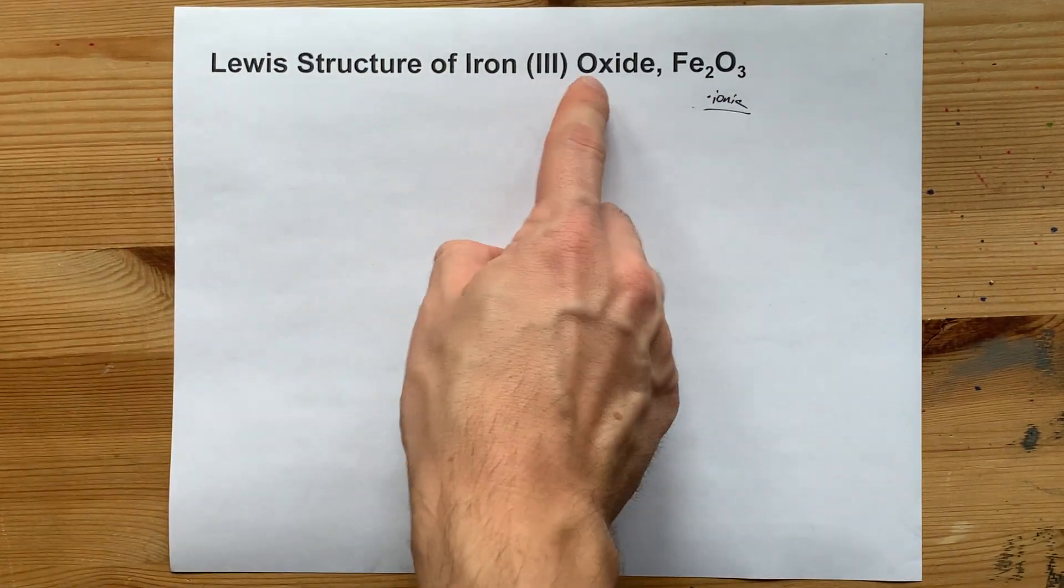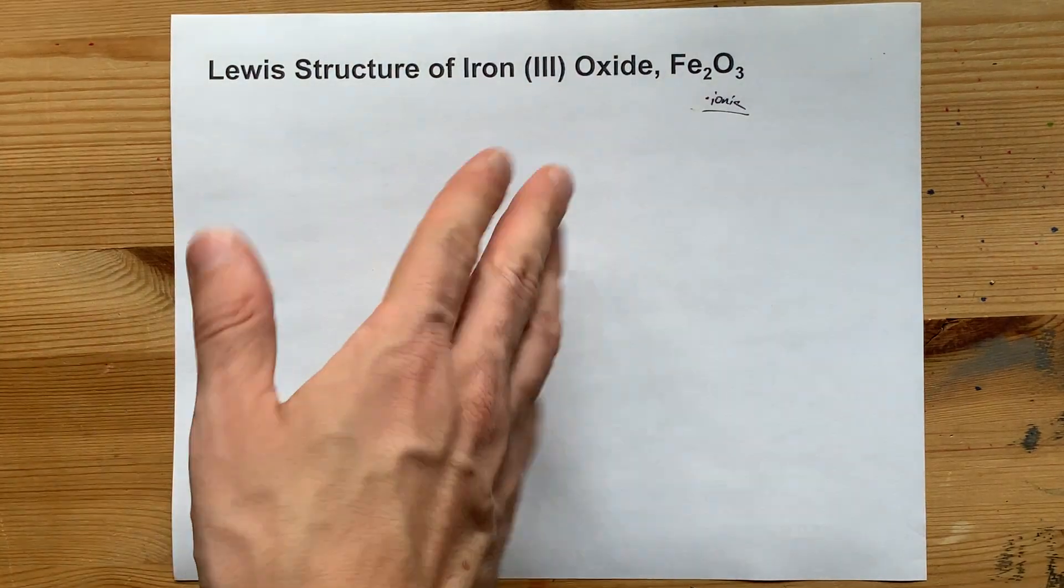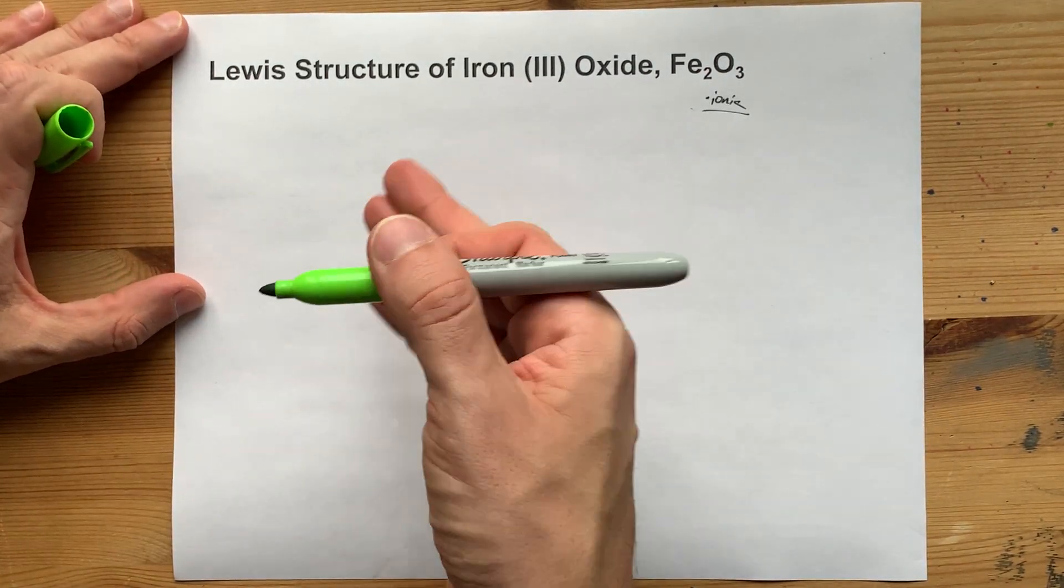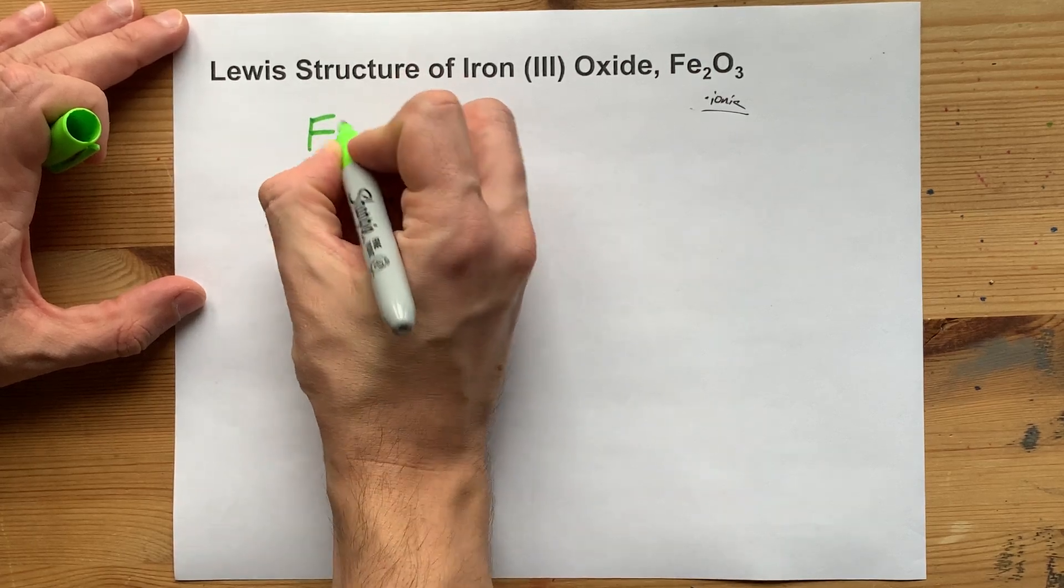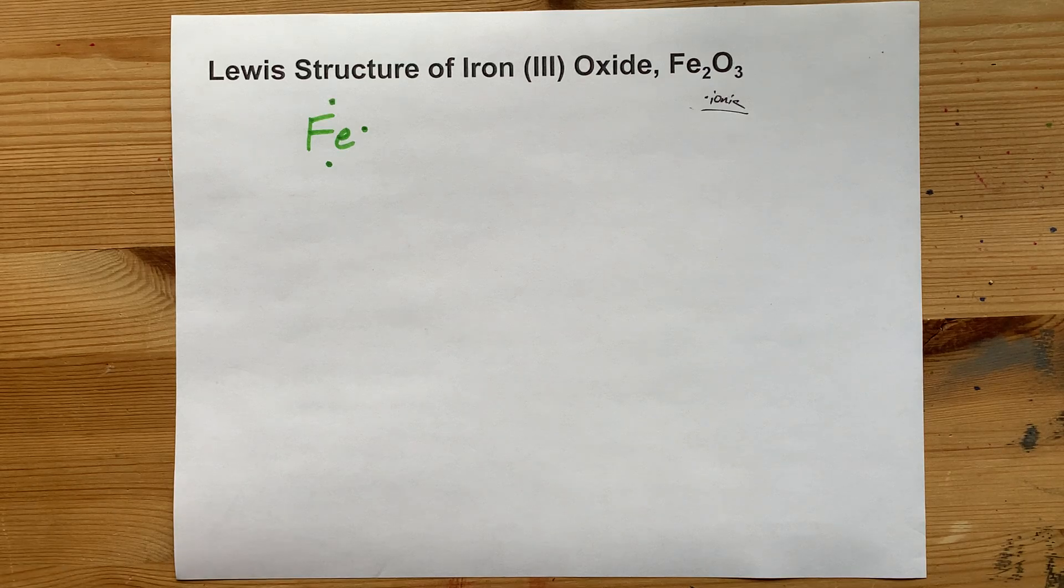Iron-3-oxide tells you that the charge on iron is plus 3. That means if you're drawing the beginning atoms that you will use to make the Lewis structure, you need to draw them with 3 valence electrons. There's an Fe, and there's the 3 valence electrons.